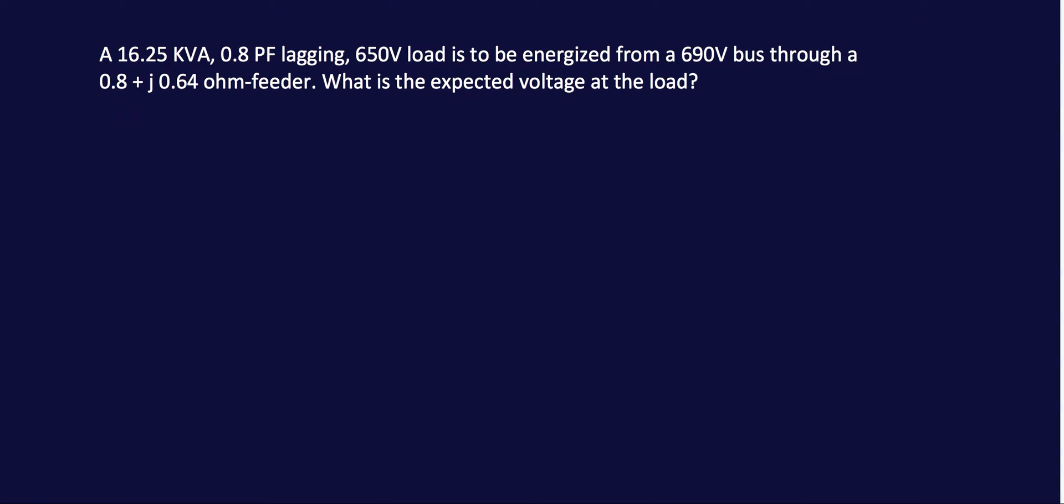We have another problem here. A 16.25 kVA, 0.8 power factor lagging, 650 volt load is to be energized from a 690 volt bus through a 0.8 plus j0.64 ohm feeder. So the question here is what is the expected voltage at the load? Since we are not given a circuit drawing, it's best if you could draw it to the best of your ability.